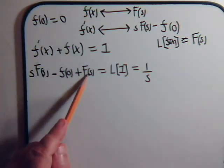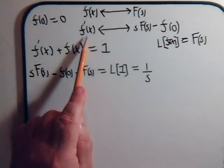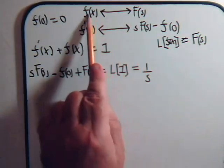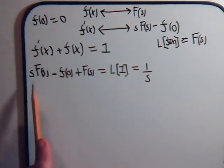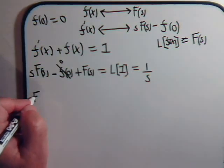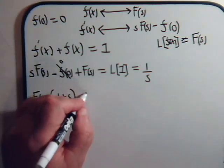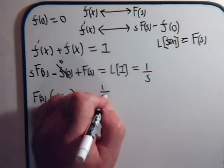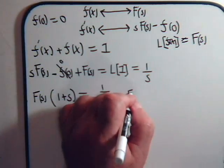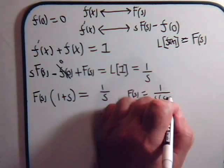There's f of x and its corresponding Laplace transform F(s), whatever it may turn out to be. For f prime of x, that's going to be equal to s times F(s) — that's what the relationship states — minus f of zero, and we're given that f of zero is 0. So now we have F(s) times the quantity 1 plus s equals 1 over s, which gives us F(s) equals 1 over s times the quantity s plus 1.